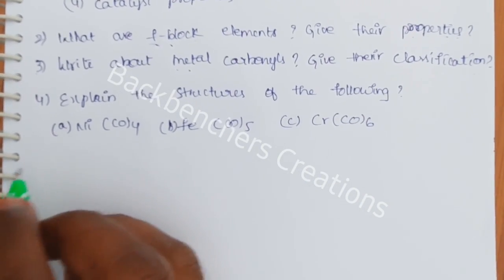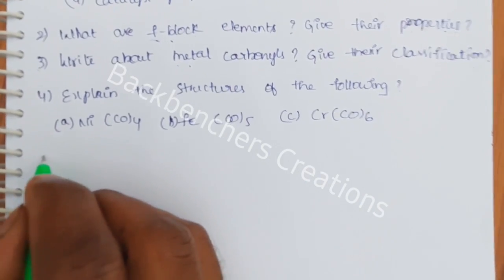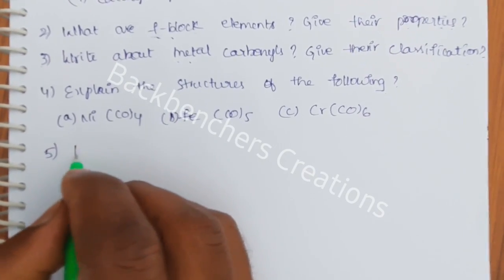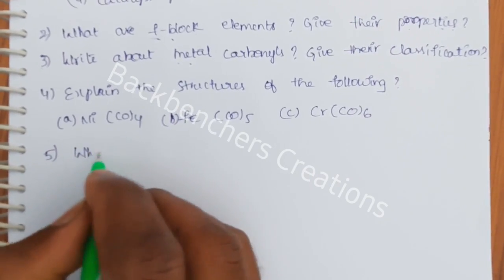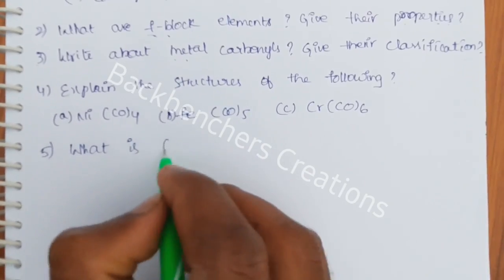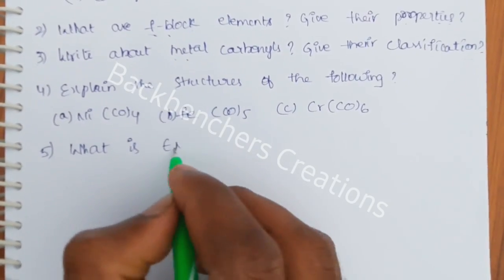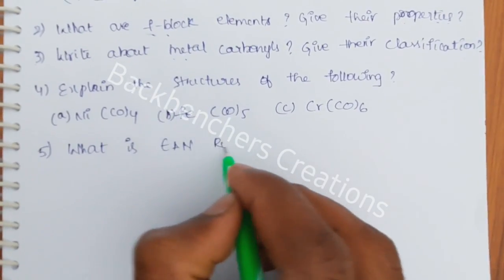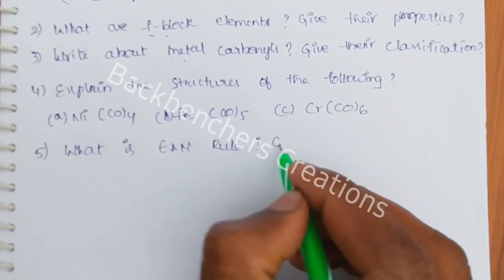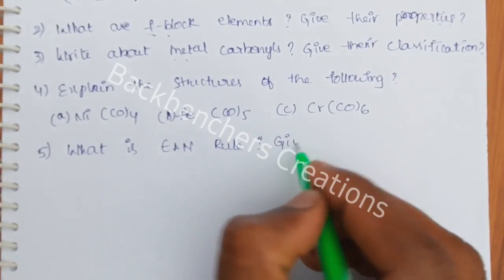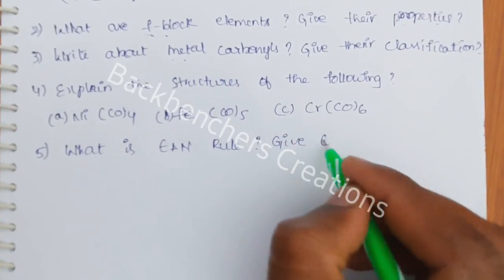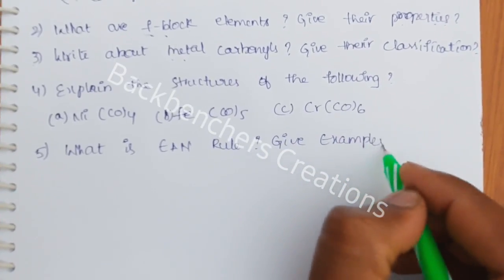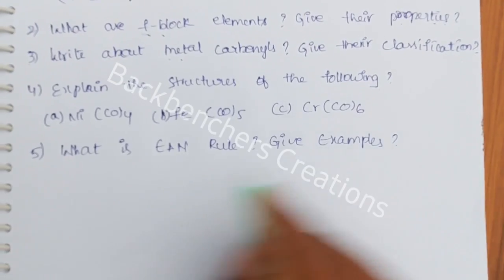Fifth question: What is the EAN rule? Give examples.